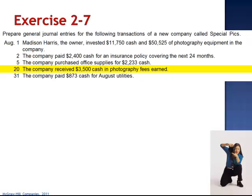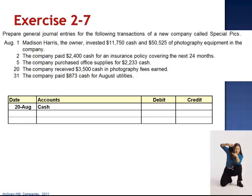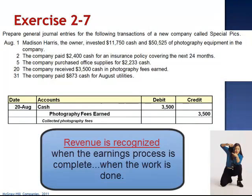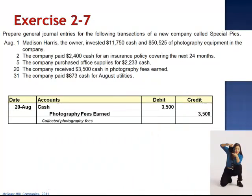August 20th, the company received $3,500 cash in photography fees earned — she's done the work for a cash customer. The journal entry is a debit to cash for $3,500 and a credit to the revenue account photography fees earned. The revenue recognition principle states that we record revenue at the time we do the work. Since she's done the work, she records the revenue. This transaction affects the income statement and the balance sheet.